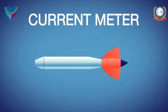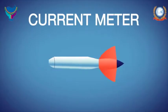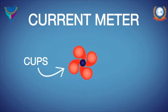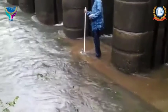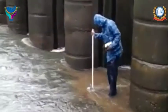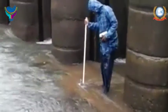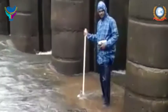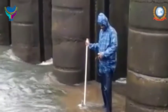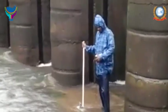The current meter is a device used to measure water velocity in open channels. This information is a core part of water allocation and management and is also used for a variety of engineering and scientific purposes. There are two types of current meters used in hydrometry and oceanography.